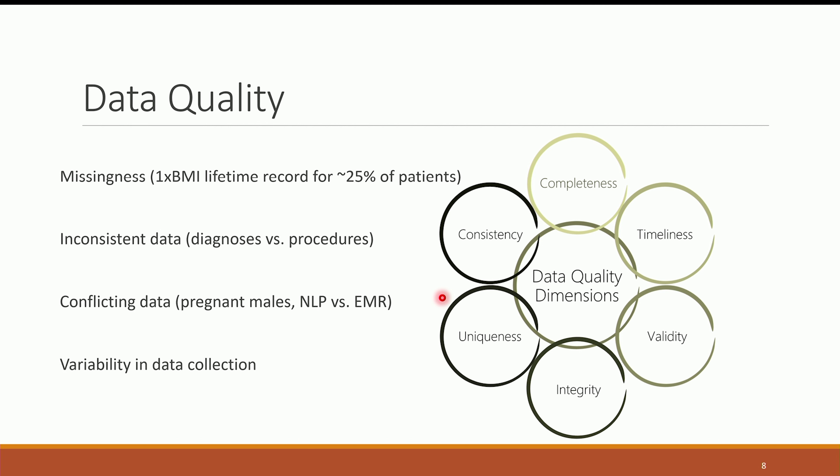Inconsistent data: diagnosis versus procedures. We always have the question — what do you trust more, the diagnosis set by a doctor or the CPT procedure code that was actually billed? Because CPT has better oversight, instinctively you would trust what the hospital was billed and audited for. But that's not the case — you've all probably gone to the dentist for a cleaning and had 20 CPT codes added on top. Truth is somewhere in between, and there are many other aspects of inconsistent data.